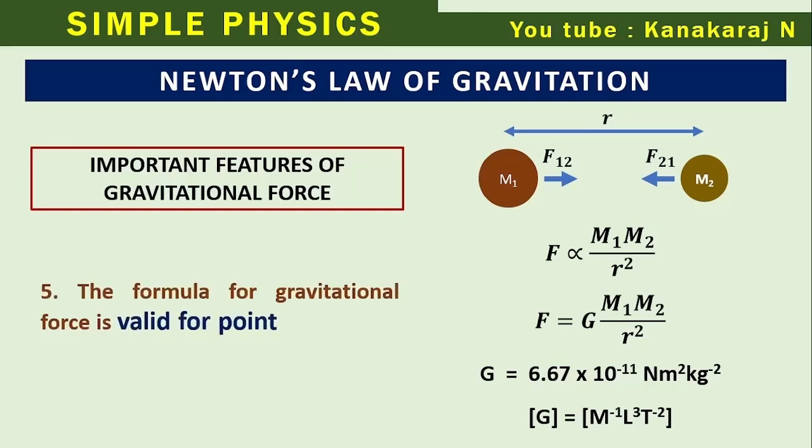The formula for gravitational force is valid for point masses. The point mass means the masses should be compared to the surrounding volumes. The earth is a point mass when compared to the volume of the solar system.